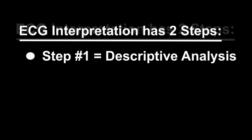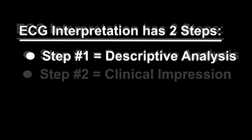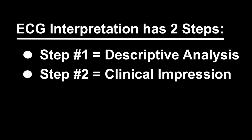ECG interpretation has two steps. Step one is the easy part: describe what you see — rate, rhythm, intervals, axis, hypertrophy, QRS-T changes. Step two is the clinical impression: based on the history, determine what to do with the patient.